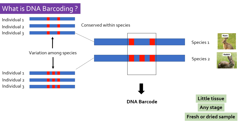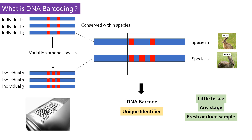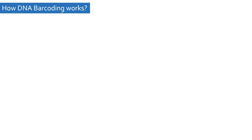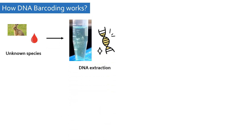A DNA barcode is a short DNA sequence which serves as a unique identifier for a particular species — just like a product barcode you find in a store. Now let's see how DNA barcoding is done. DNA barcoding involves five major steps. First, a little biological sample of an organism is collected from which the DNA is extracted.